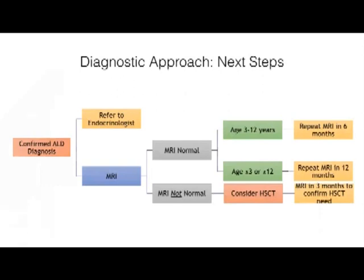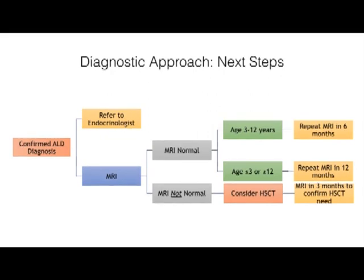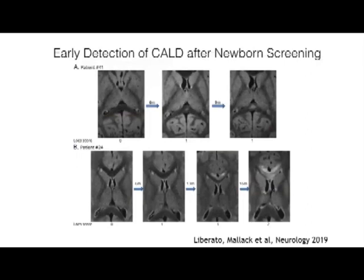To detail the next steps after diagnosis: repeat the MRI every six months between the ages of 3 and 12. If the boy is less than 3 years of age or above 12, repeat it once a year. If the MRI shows an abnormality, consider bone marrow transplantation if contrast enhancement is present. We now understand that the conversion to cerebral ALD can be quite subtle and is different than what we have observed historically.